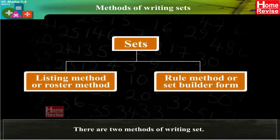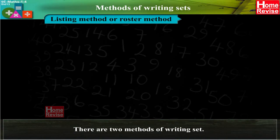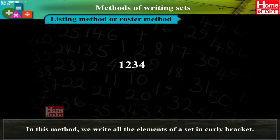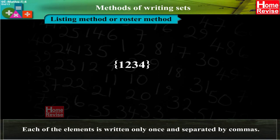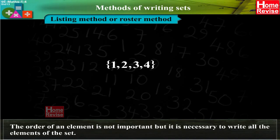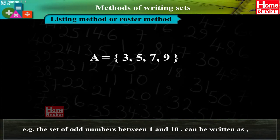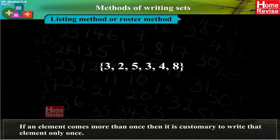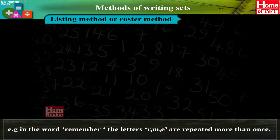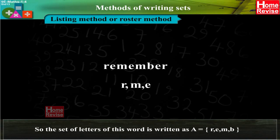Methods of writing sets: There are two methods. (1) Listing method or roster method: We write all elements of a set in curly brackets. Each element is written only once, separated by commas. The order is not important but all elements must be listed. Example: The set of odd numbers between 1 and 10 can be written as A = {3, 5, 7, 9} or A = {7, 3, 5, 9}. If an element appears more than once, it is written only once. Example: In the word 'remember', r, m, e are repeated, so the set of letters is A = {r, e, m, b}.